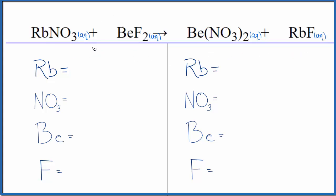To balance it, let's count the atoms up. We have one rubidium and then we have the nitrate ion here, so we're going to count it as one thing. We have one nitrate ion in the reactants, one beryllium and two fluorine atoms.